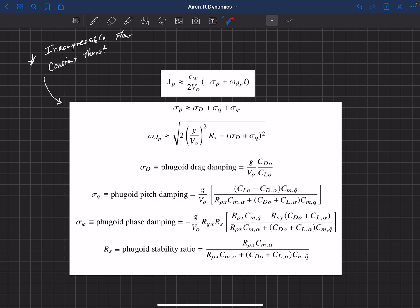We can get a closed form solution for the dimensionless eigenvalue, and that can be written in terms of a damping and a frequency. That damping actually has three different terms in it. He calls the first term the fugoid drag damping, and that is related to our lift to drag ratio. It's the inverse of our lift to drag ratio. Notice we have a G over V naught multiplied out in front of the first three of these. That's the damping in the fugoid that comes from drag on the aircraft.